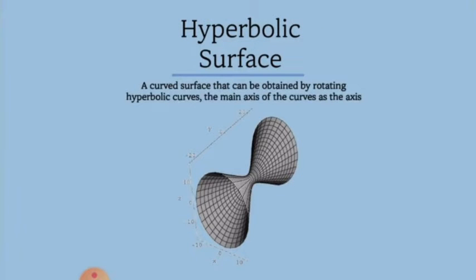And a hyperbolic surface is a curved surface that can be obtained by rotating the main axis of these hyperbolic curves as axis.